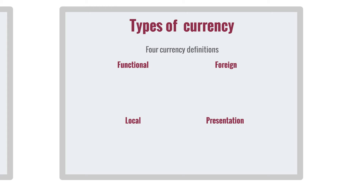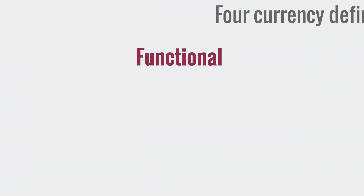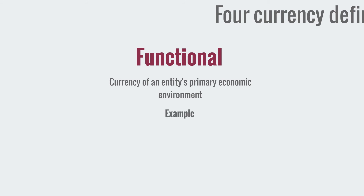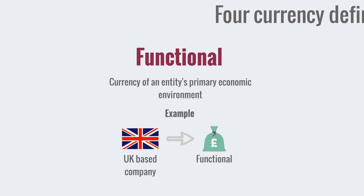The functional currency is the currency of an entity's primary economic environment. In most cases this is going to be the local currency. So a company based in the UK, for example, will use pound sterling as their functional currency. This is based on the idea that a UK-based company will be registered in the UK, have UK offices, UK bank accounts, and pay tax to the UK government — so for all intents and purposes, the functional currency is British pounds sterling.